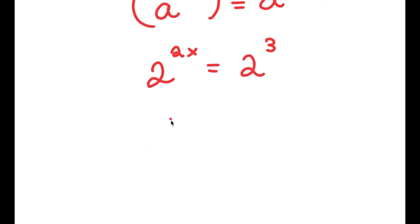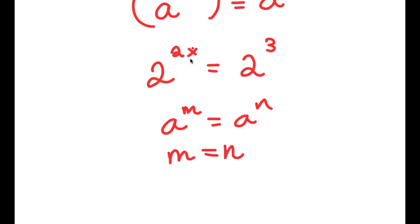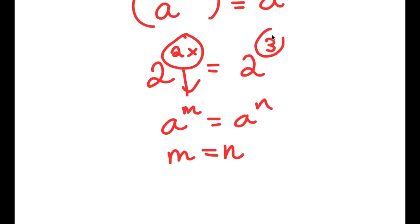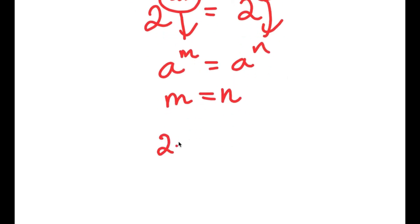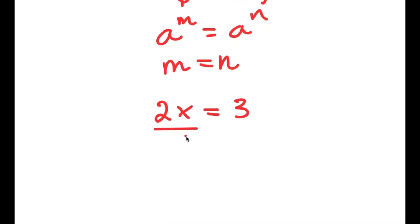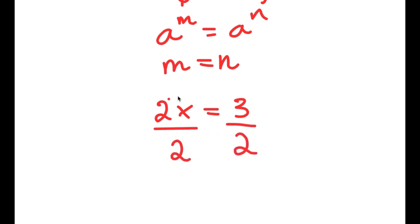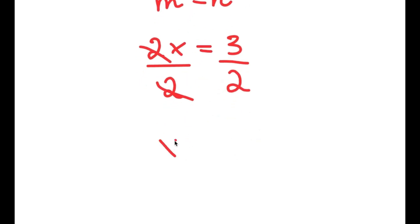Now, if I have something in the form a to the power of m is equal to a to the power of n, this means that m is equal to n. So in this case, 2x is equal to 3. This is a simple equation — all I have to do is divide both sides by 2. These two cancel out, and I get x is equal to 3 over 2.